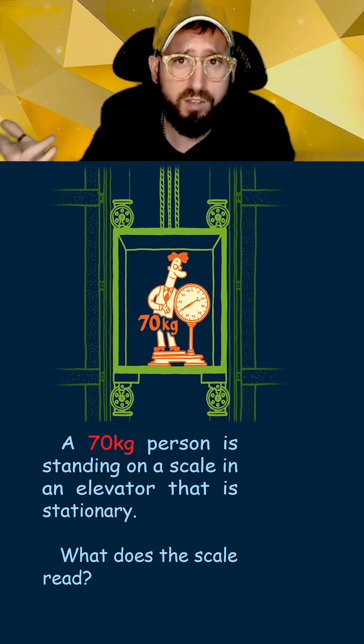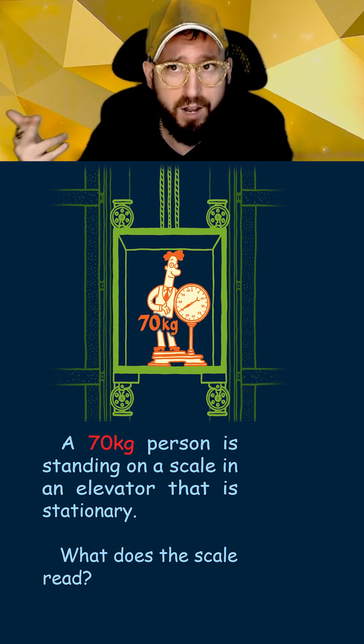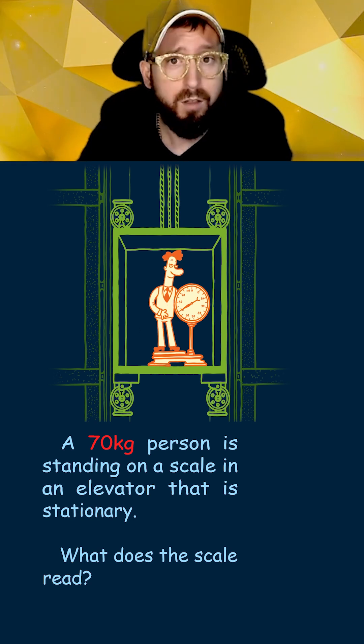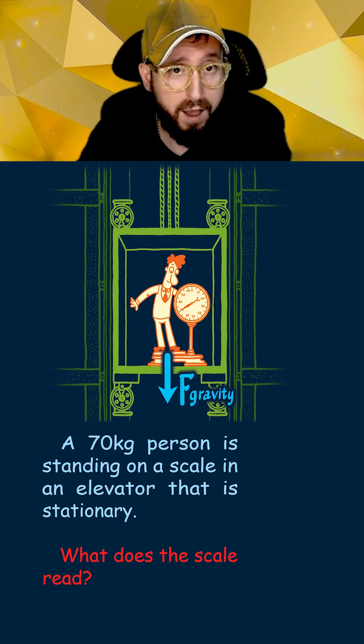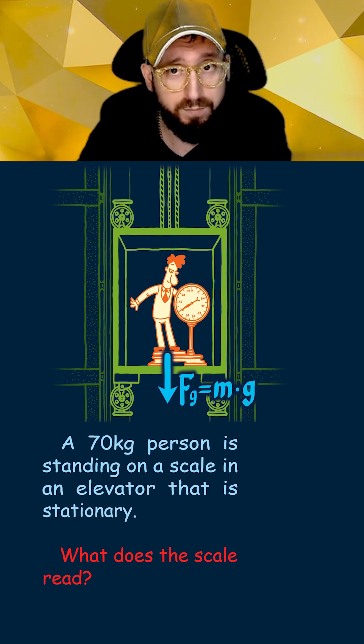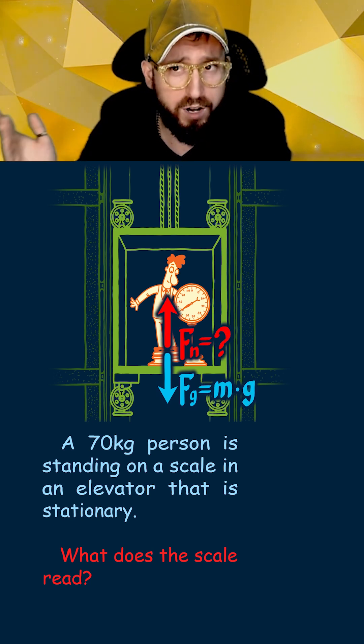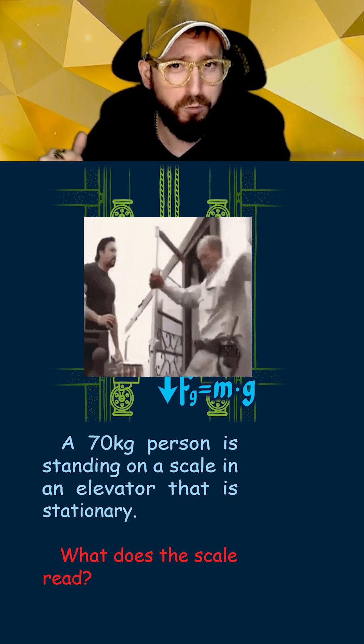Let's consider the first case, where a 70kg person is standing on a scale in an elevator, and the elevator is at rest. The first thing we do is draw our force diagram, which has the force of gravity pointing straight down, m times g, and an unknown normal force pointing straight up. This is what keeps the person from falling through the elevator floor.